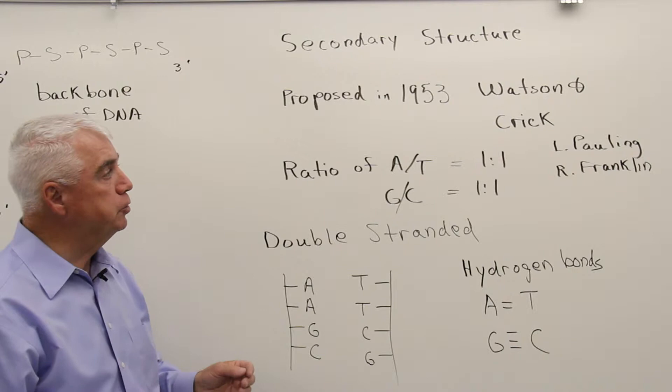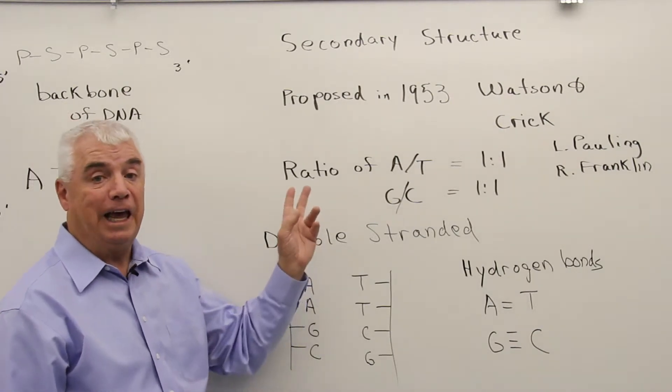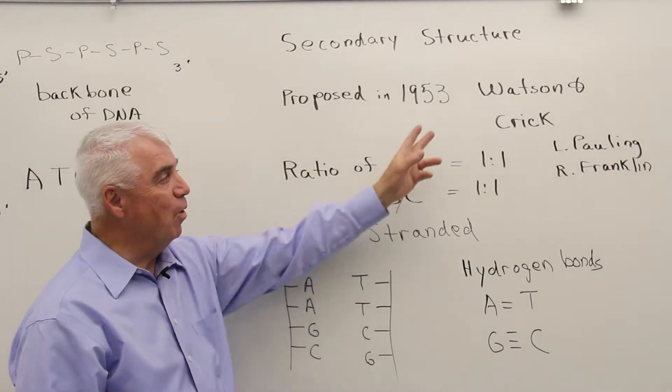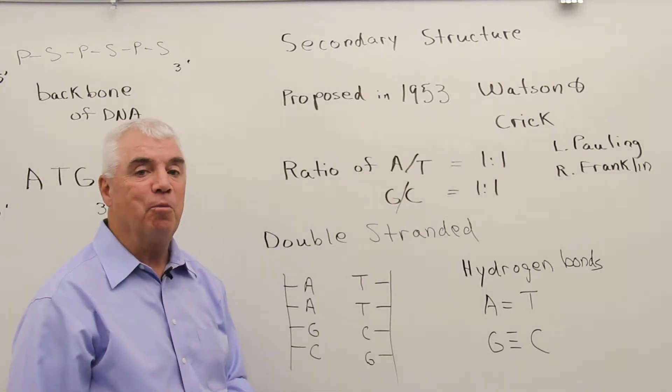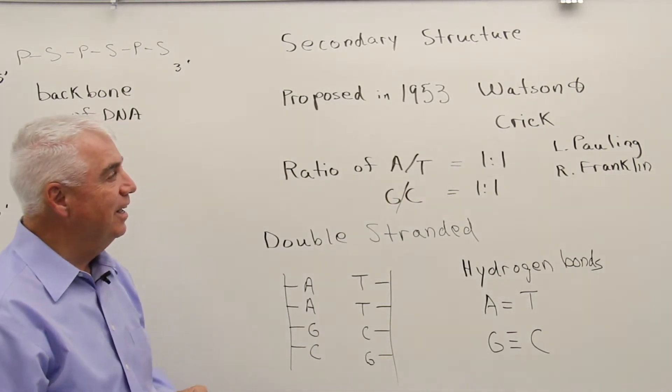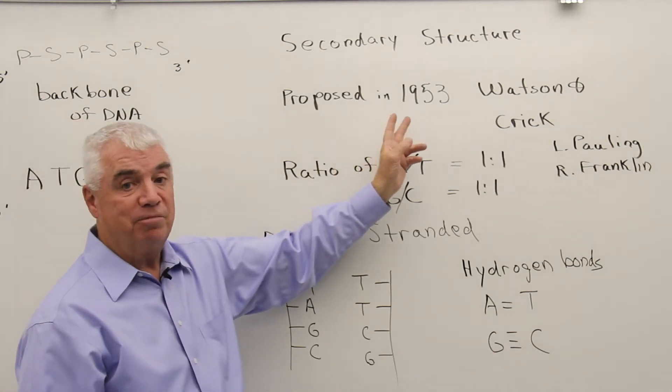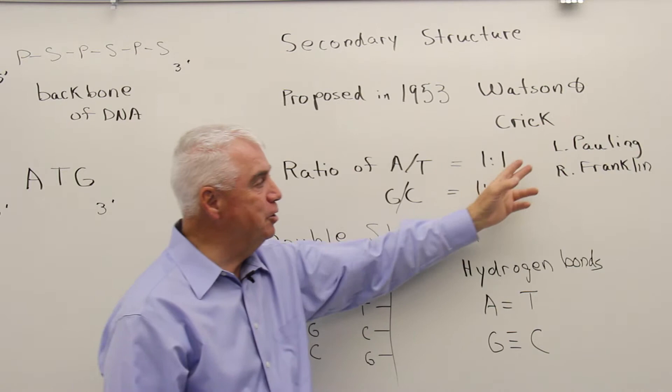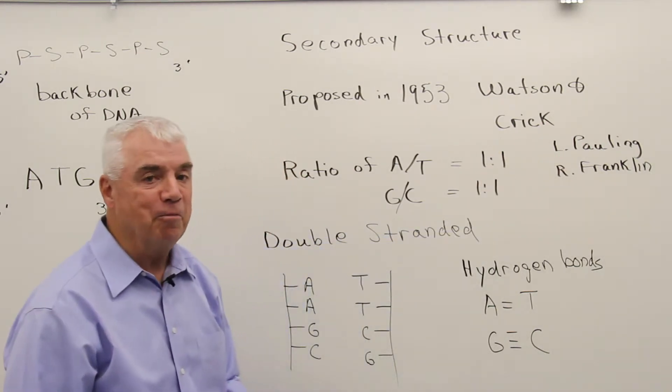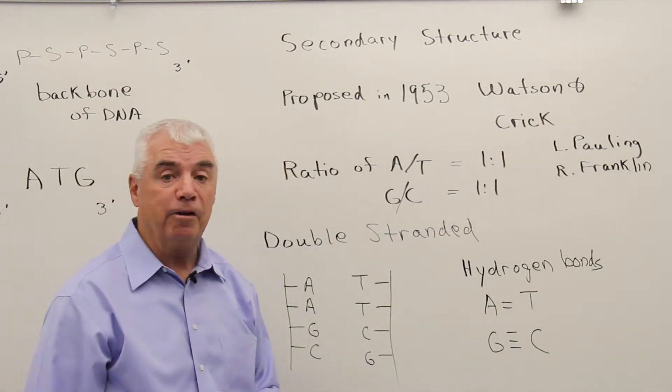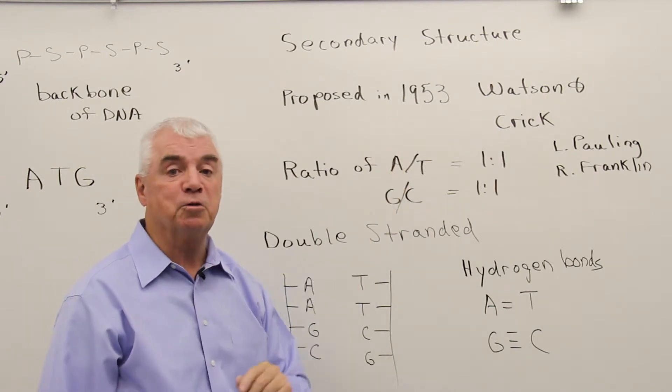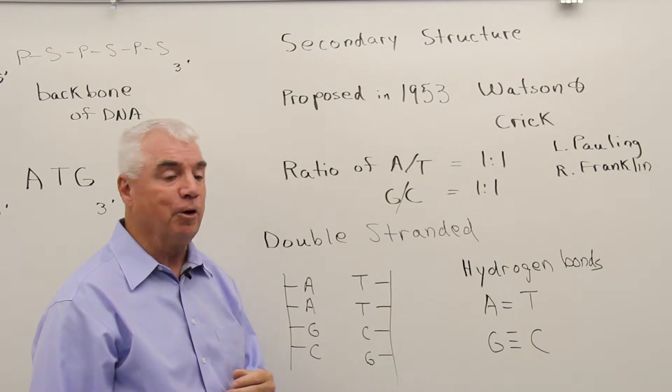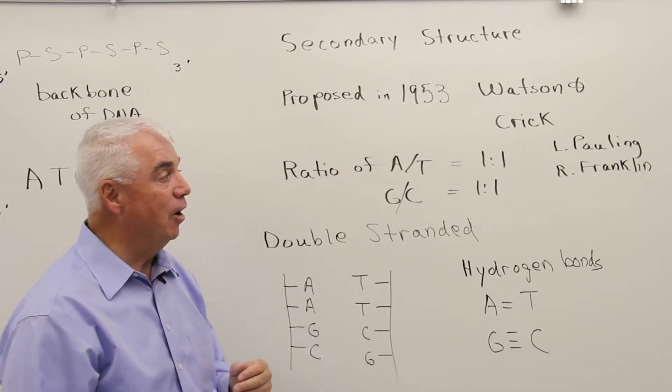The secondary structure of nucleic acids, or DNA, was proposed in 1953 by Watson and Crick. They received the Nobel Prize for their work. They came up with the double helix for DNA. I wanted to mention too that Linus Pauling was not far behind. Linus Pauling, you recall, had proposed the helical structure for proteins, and he was proposing a helical structure for nucleic acids as well.